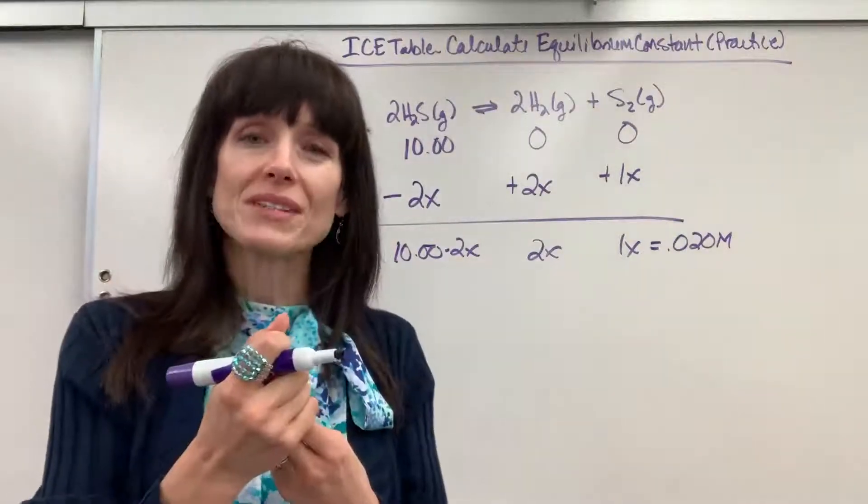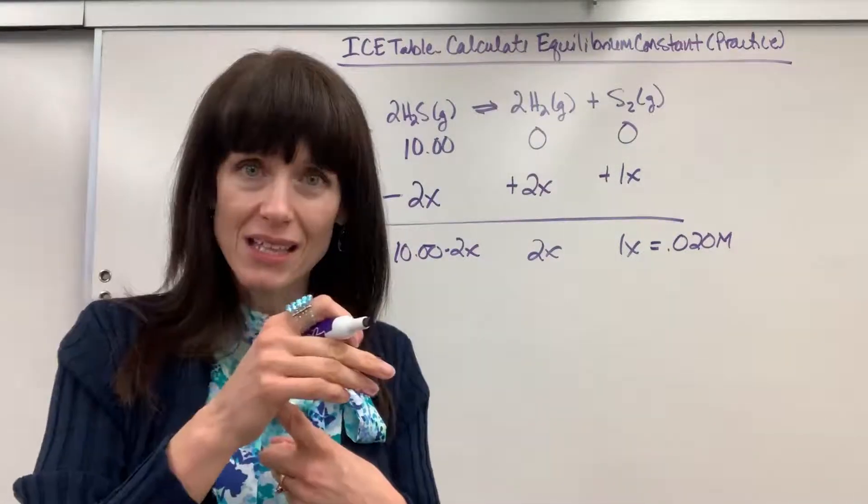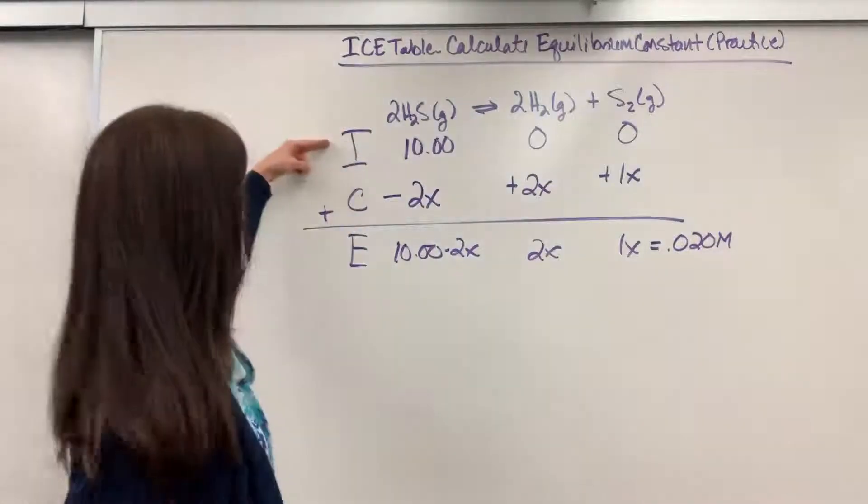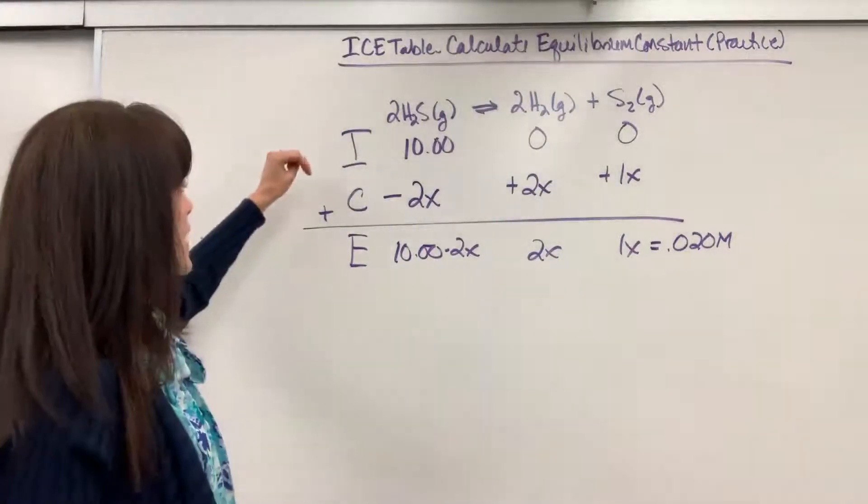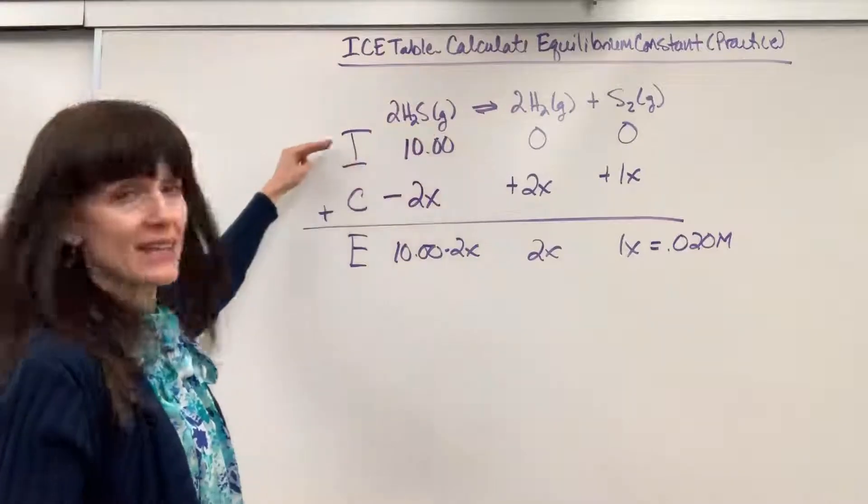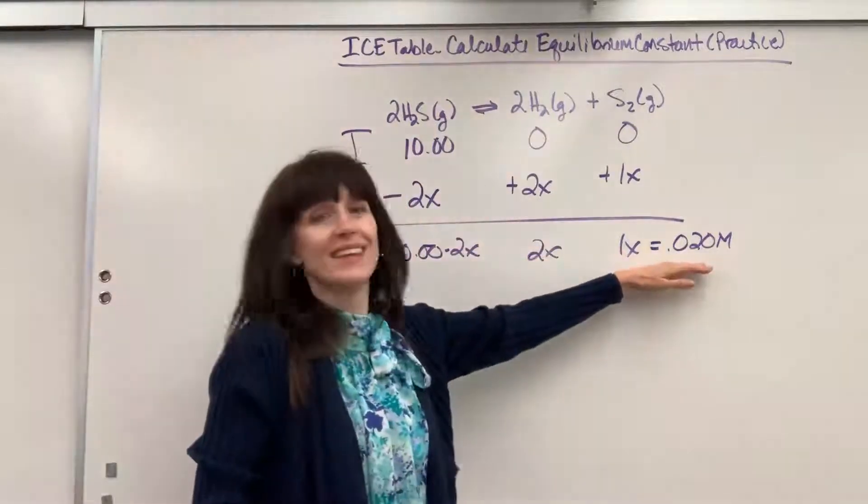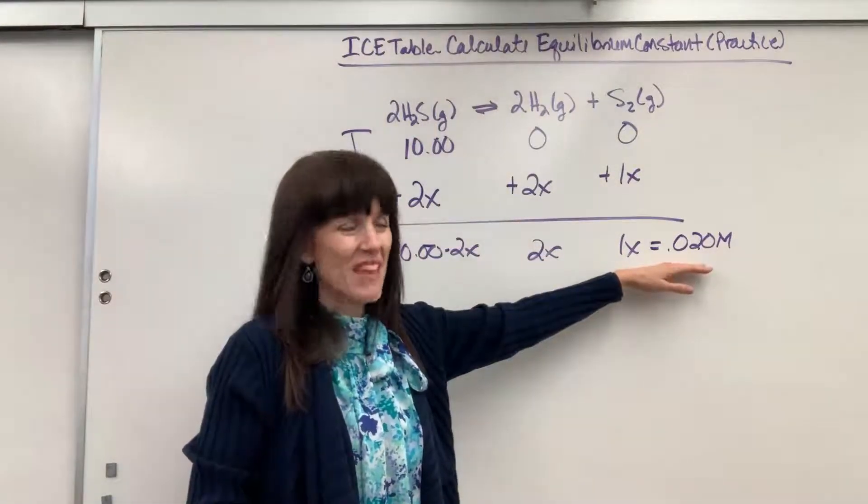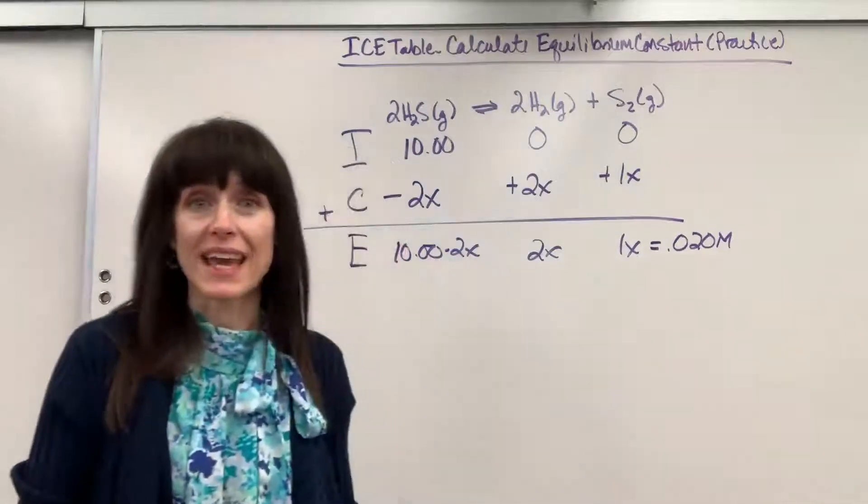Remember, there are three components in an ICE table. It's going to be K, the equilibrium constant, the initial concentration, and the equilibrium concentration. So they in essence gave us I (initial) and the equilibrium E. Now we can find K.